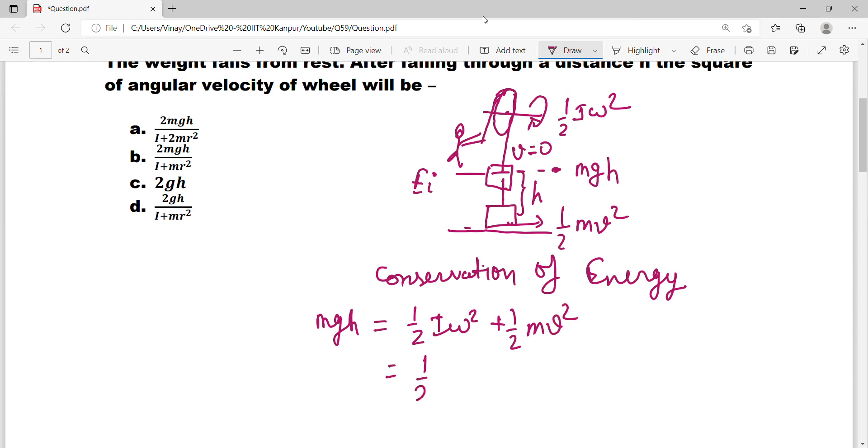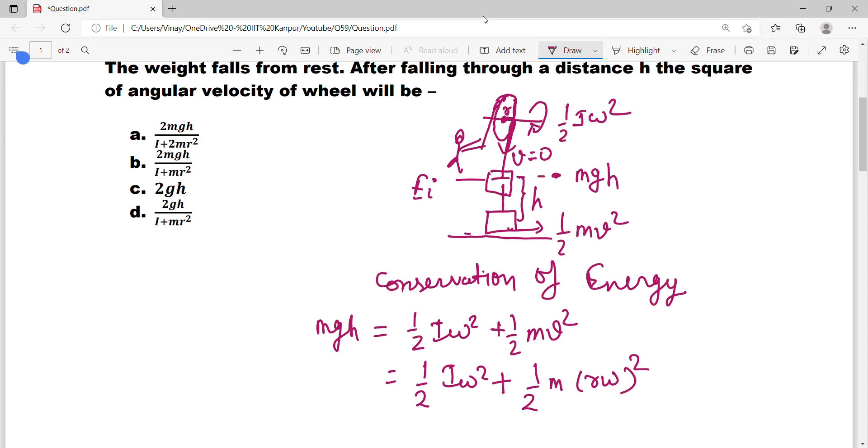So your equation becomes mgh equals half I omega squared plus half mv squared. You can write v equal to r omega, where r is the radius of the axle.